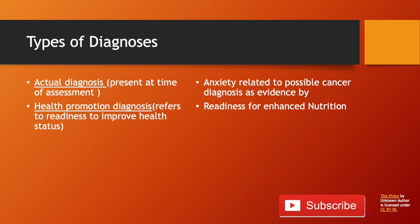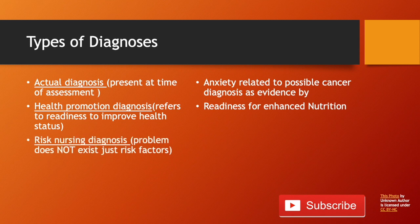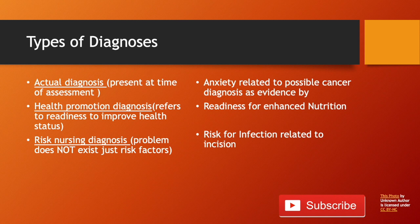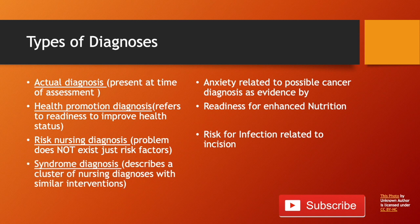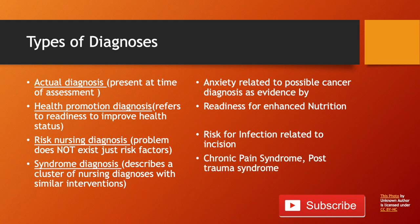Next is a risk nursing diagnosis — the problem does not yet exist, and there are only risk factors that lead you to use it. An example is risk for infection related to incision. Next is a syndrome diagnosis, which describes a cluster of nursing diagnoses with similar interventions. Examples include chronic pain syndrome and post-trauma syndrome. Syndrome diagnoses usually include the word 'syndrome' in the diagnosis.